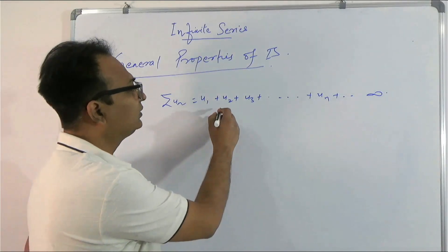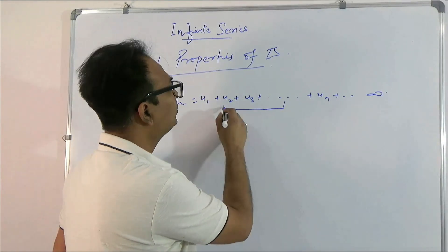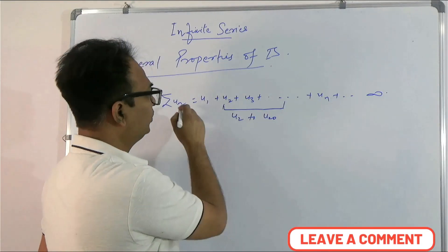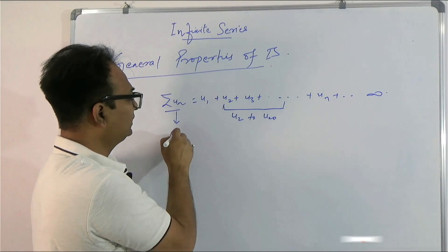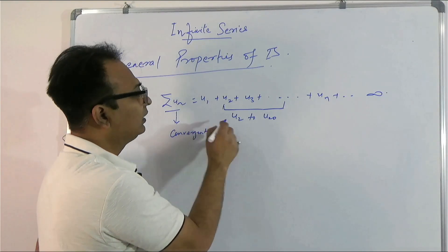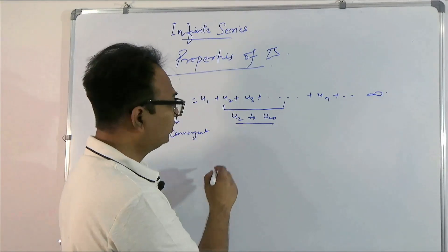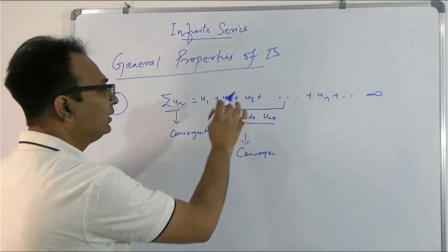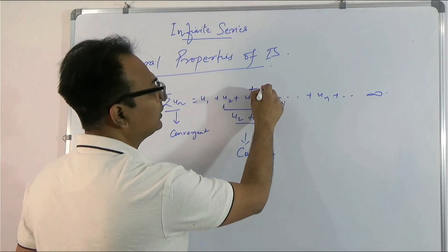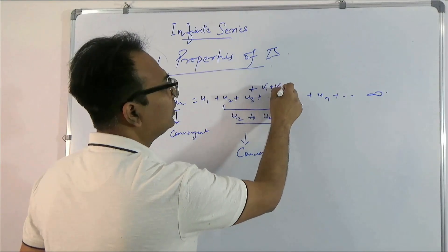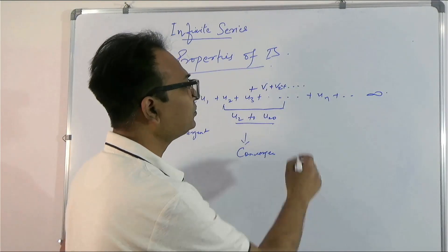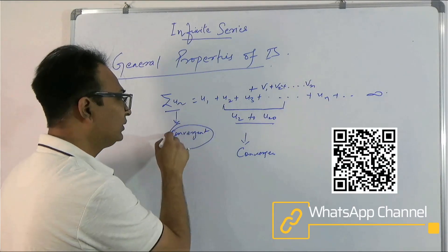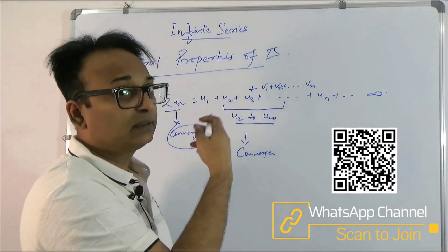For example, if in this series we remove terms u2 to u20, and if originally the series was convergent, after removal it will still remain convergent. Similarly, if we add some more terms — say v1, v2, a finite number of terms — and the series was convergent, it will still remain convergent.